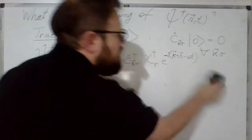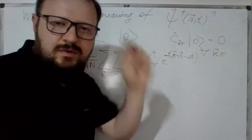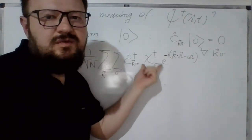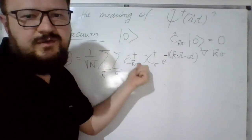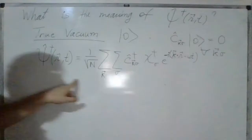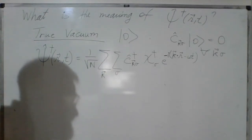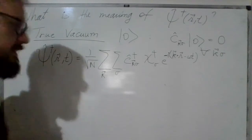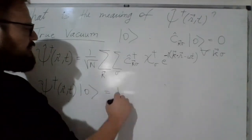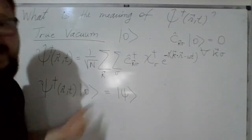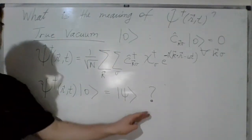Now let us turn our attention to psi dagger. In a previous lecture I omitted the spinners — usually it doesn't matter and you can make them implicit. But for completeness, let me insert the Pauli spinners. What does psi dagger do to the vacuum state? When I apply psi dagger of r and t to the vacuum, it produces some state |ψ⟩ which is not the vacuum. What is this state?